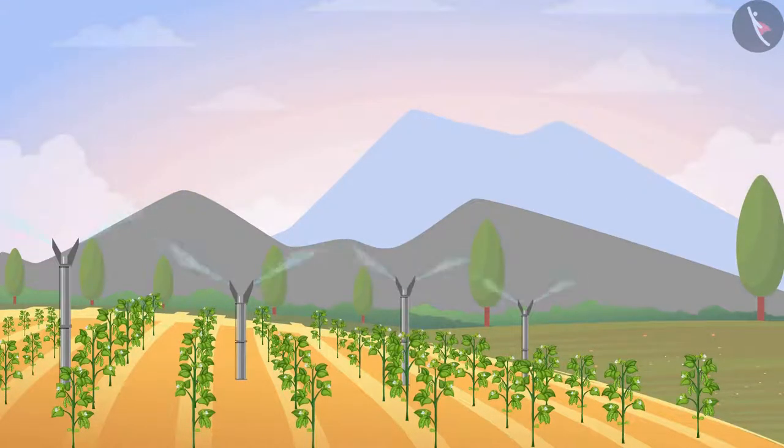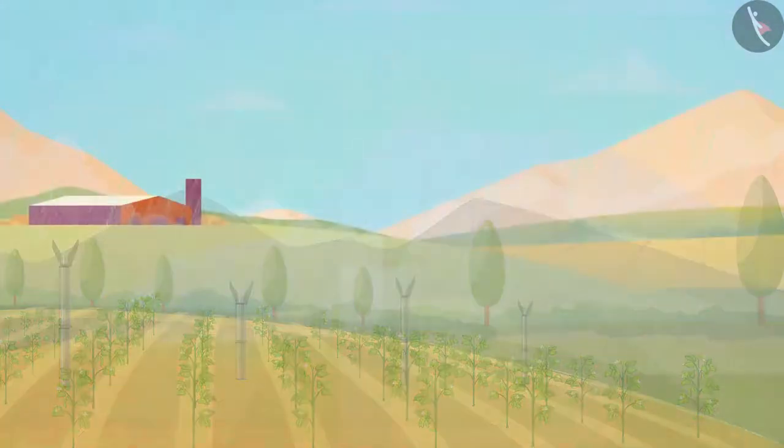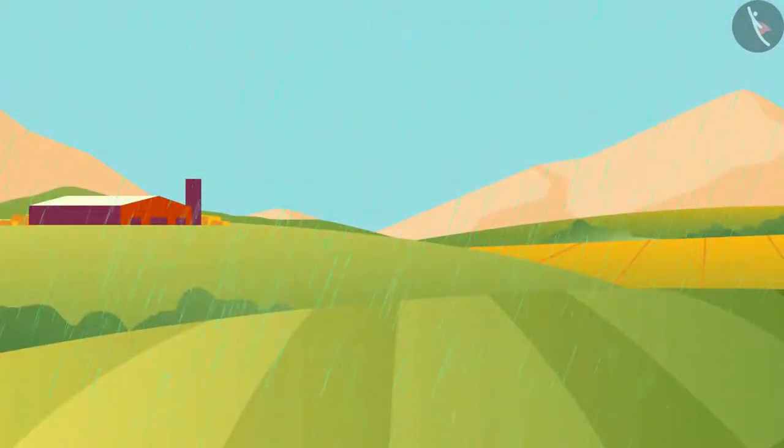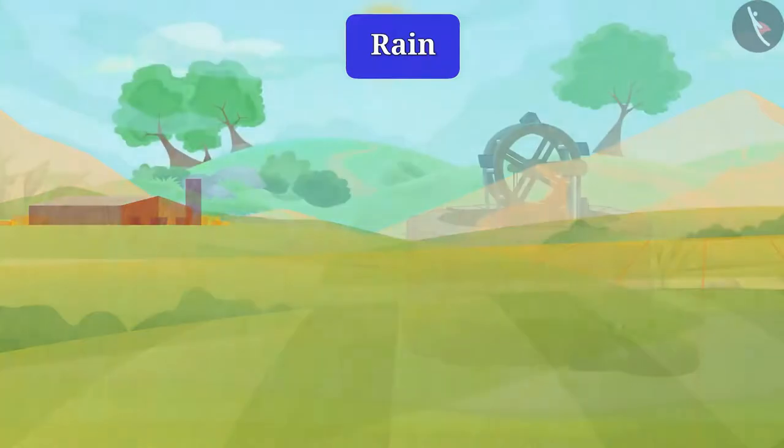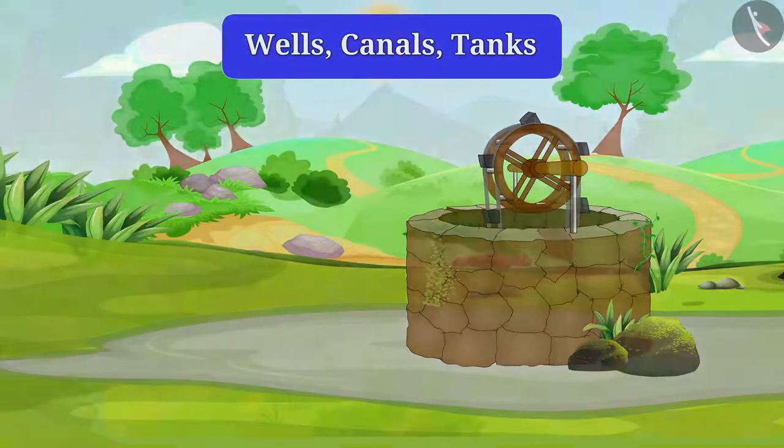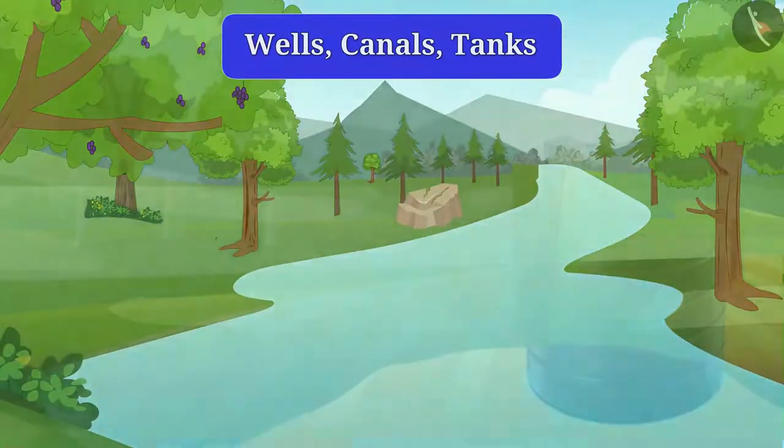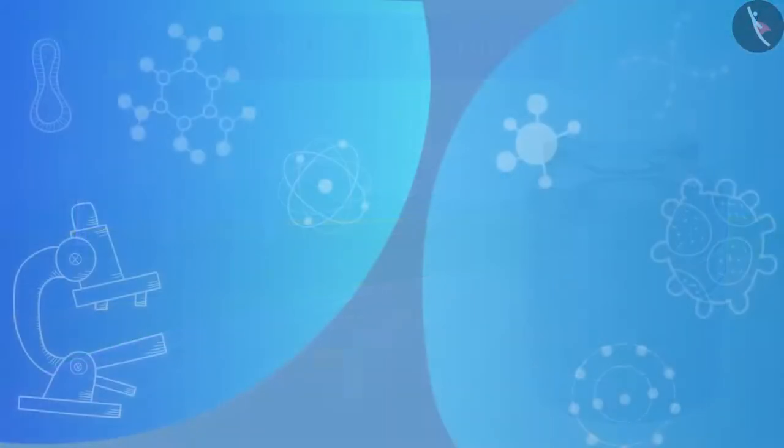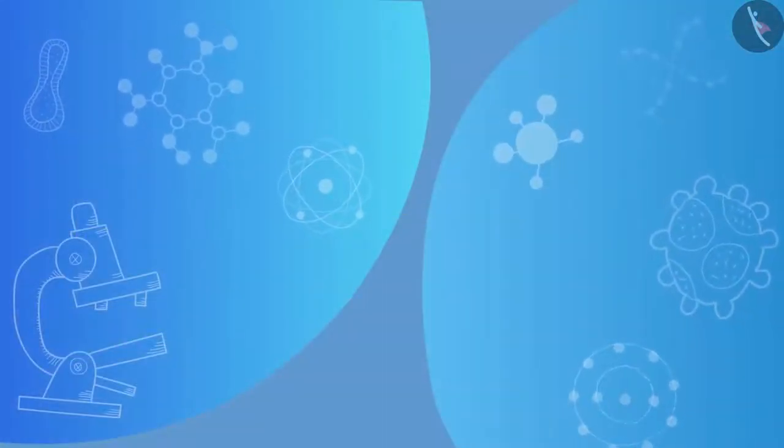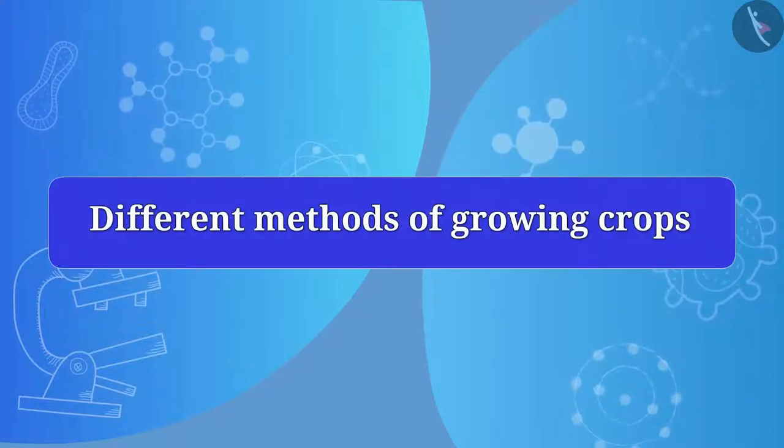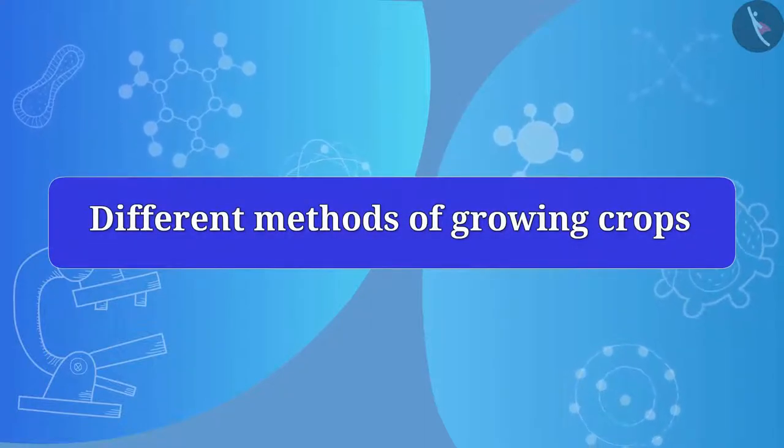What did you learn from this? Water is very essential for plant growth. Do you know where plants get water from? Plants get water naturally from rain and artificially from wells, canals, tanks, etc. Do you know that crop production can be increased by using different methods of growing crops?